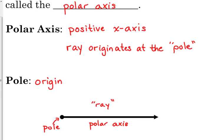The polar axis is the same as the positive x-axis. That's just what that type of line is. It has a point on one end and an arrow on the other end. That's a ray.